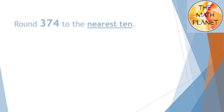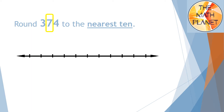Let's look at an example: how can we round 374 to the nearest 10? In order to round this number to the nearest 10, first I need to circle the tens digit, which is 7 in this example. Next, I will draw the number line. Since I am concerned about the tens digit, I will replace any number to the right of the tens digit by zeros, so my lower benchmark will be 370.